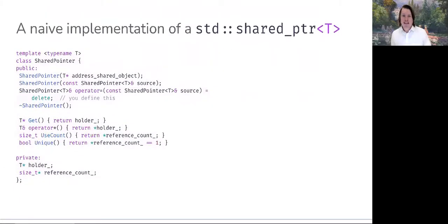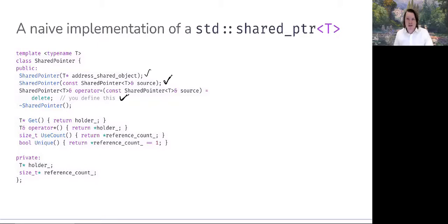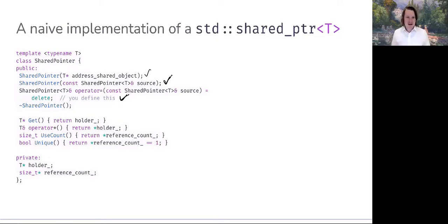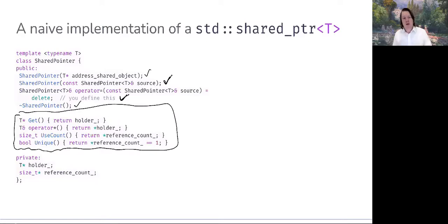Going from our UML to our class template shared_pointer, we can see our parameterized constructor, our copy assignment operator — which I've deleted so there's no way to assign one shared pointer to another — and our copy constructor. Defining copy assignment is left as a productive exercise for you. We also have our destructor, and some inline definitions. get() is essentially going to return the address of the object to which holder points — it returns the value of holder.